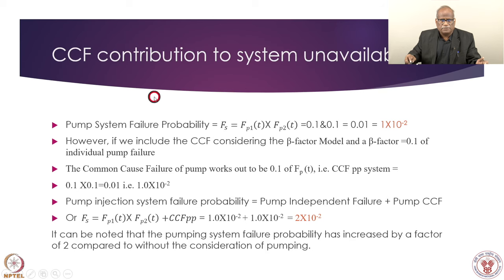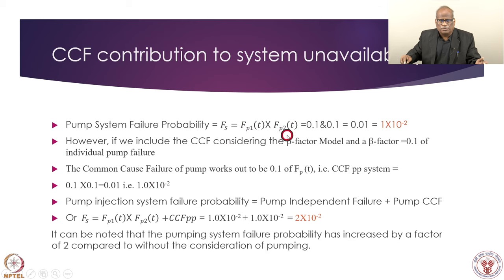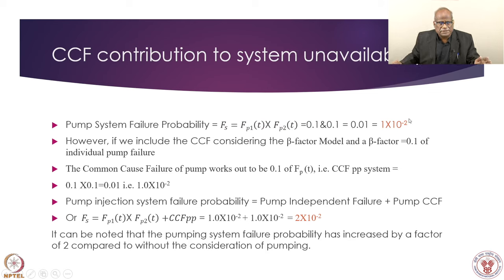Without common cause failure, the system failure probability is pump 1 failure × pump 2 failure = 0.1 × 0.1 = 1×10⁻². This is the system failure probability considering only independent component failures.